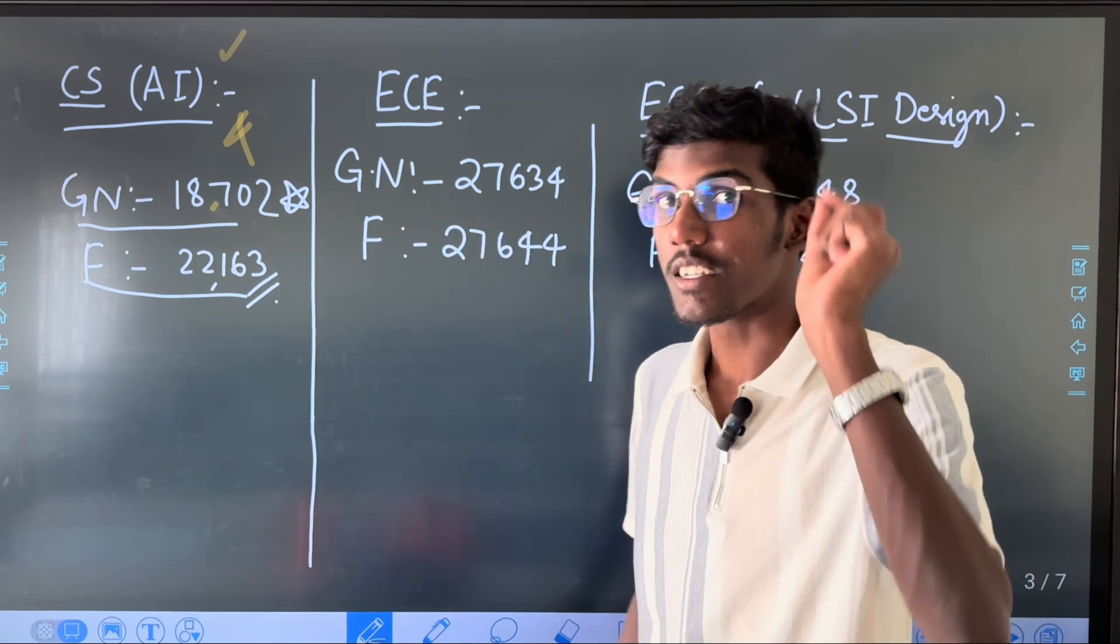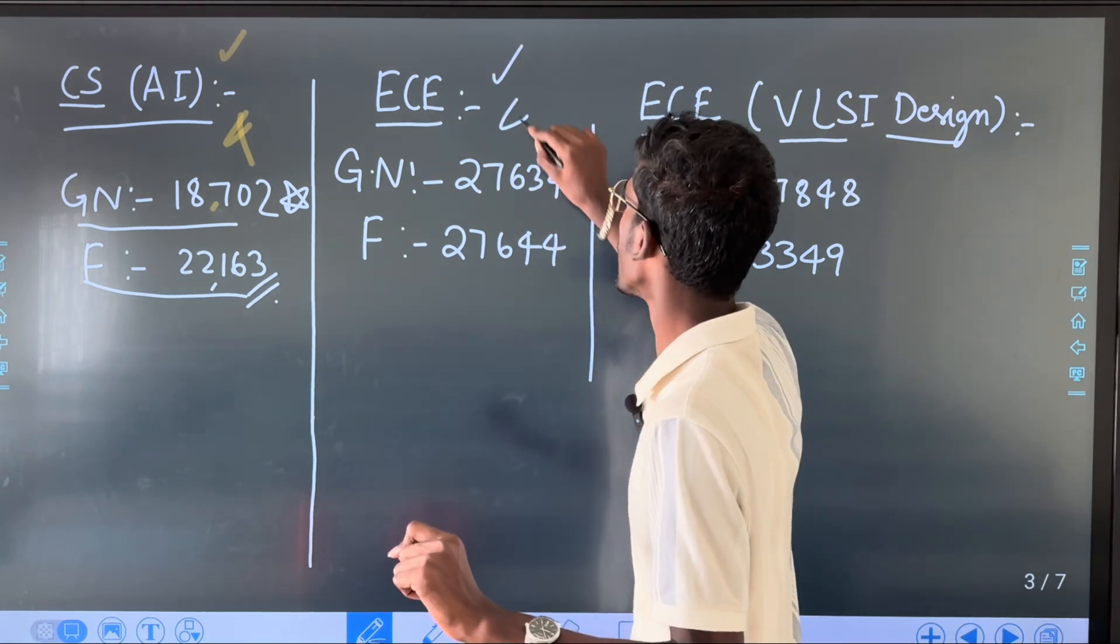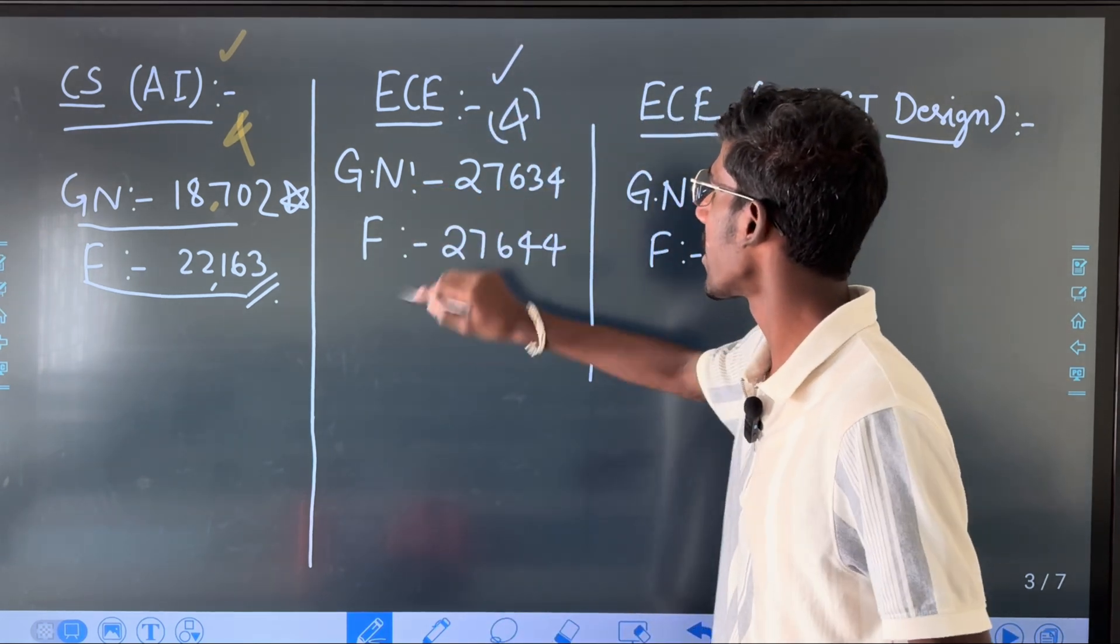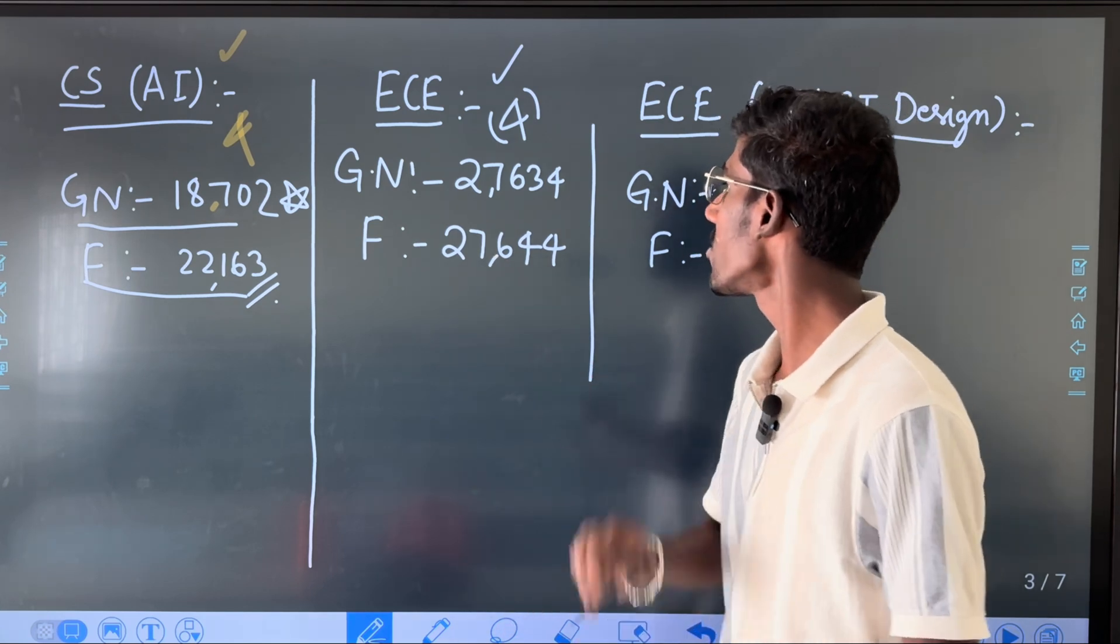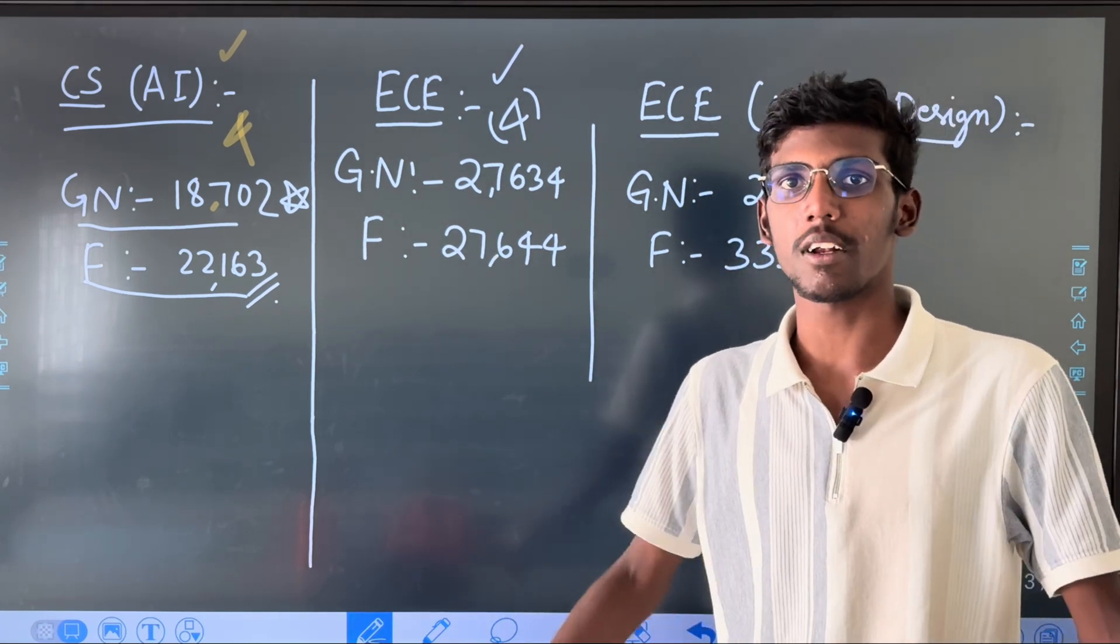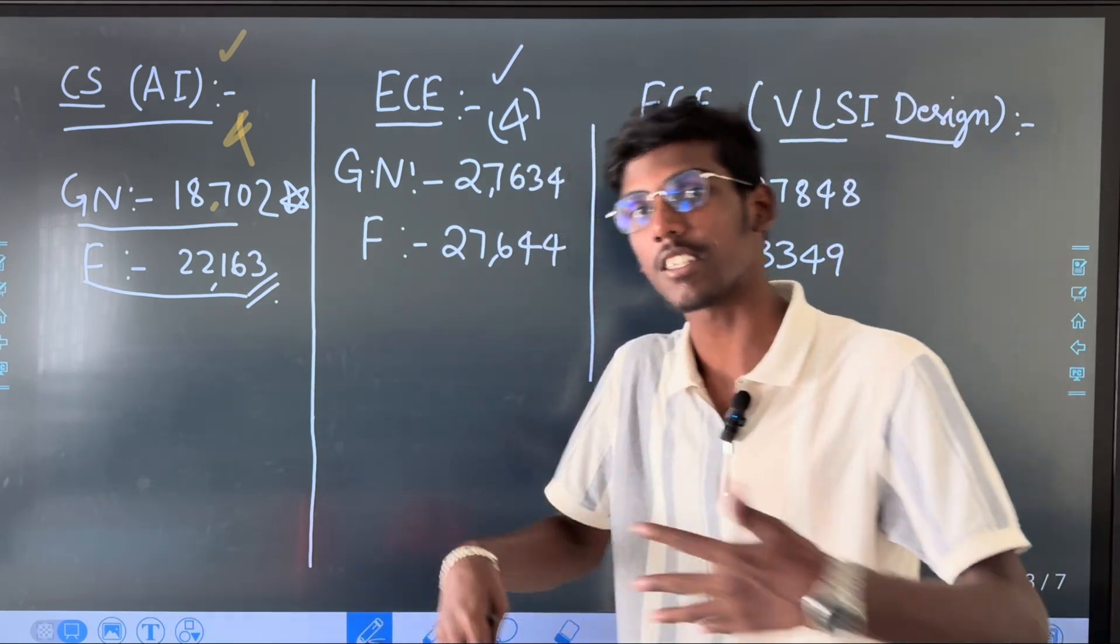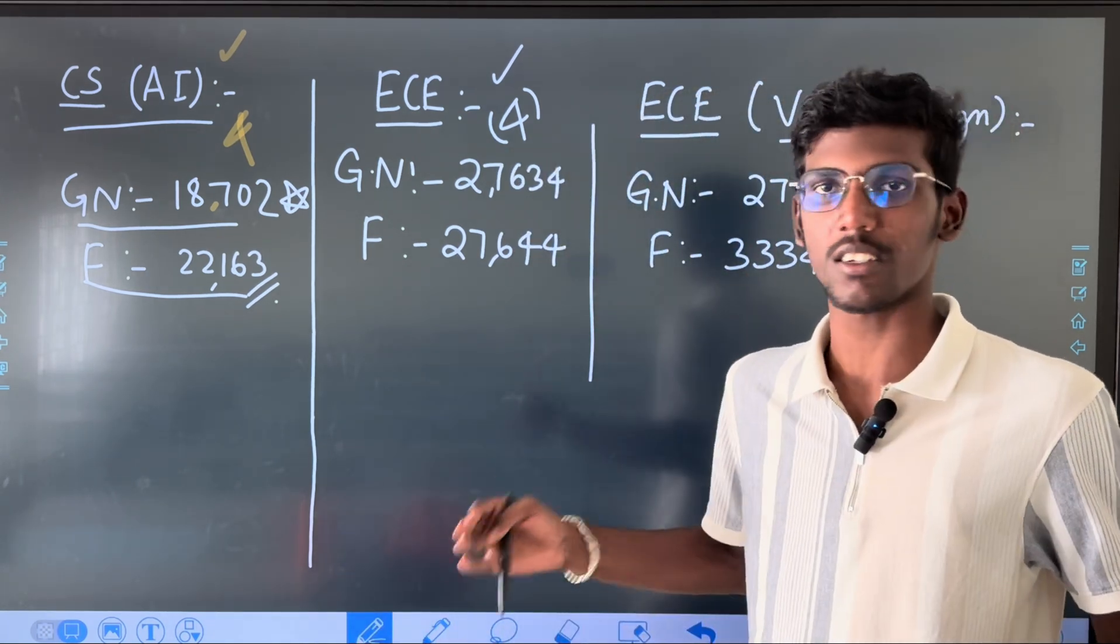This is CS three courses. ECE 4 years B.Tech course - General Neutral Category 27,634, Female 32,644. There is a difference. You can apply for female category. ECE, there is a rank. There is a seat stuck and fill.